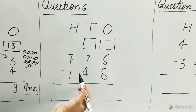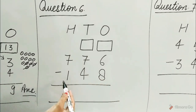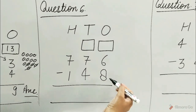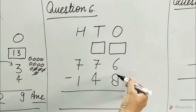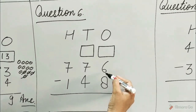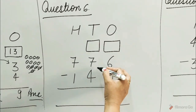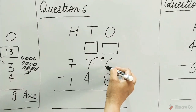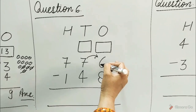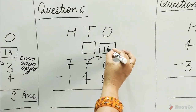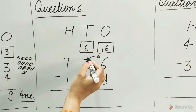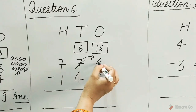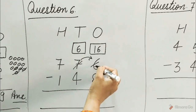Question number 6: 776 minus 148. Look at the ones column. 8 is bigger than 6 so it cannot be subtracted. Regroup the ones. Borrow 1 ten from the tens column and add it to the 6 ones. 1 ten plus 6 ones is equal to 16 ones, and 6 tens are left in the tens column. Write 16 at the place of 6.